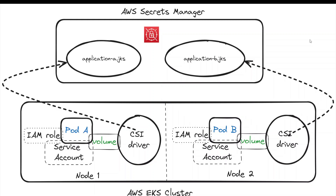To understand the concept better, imagine you have an AWS EKS cluster at the bottom, and we also have AWS Secrets Manager. There are two secrets: application-a.jks and application-b.jks. Note that both of these are binary secrets and not text or JSON key-value pairs. The EKS cluster has two nodes — node 1 is running pod A and node 2 is running pod B.